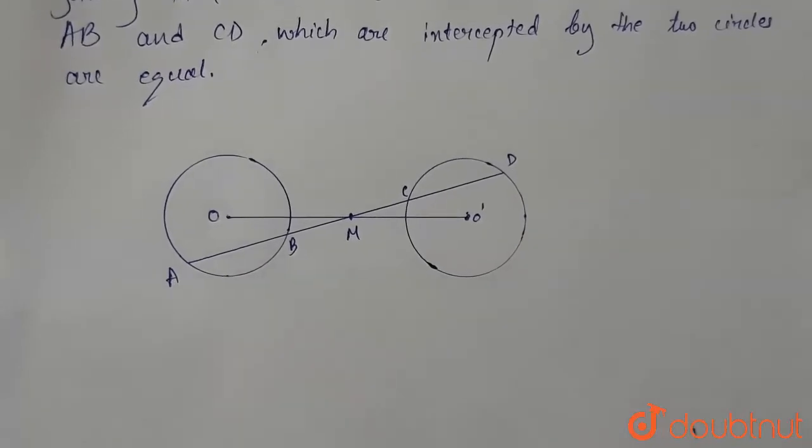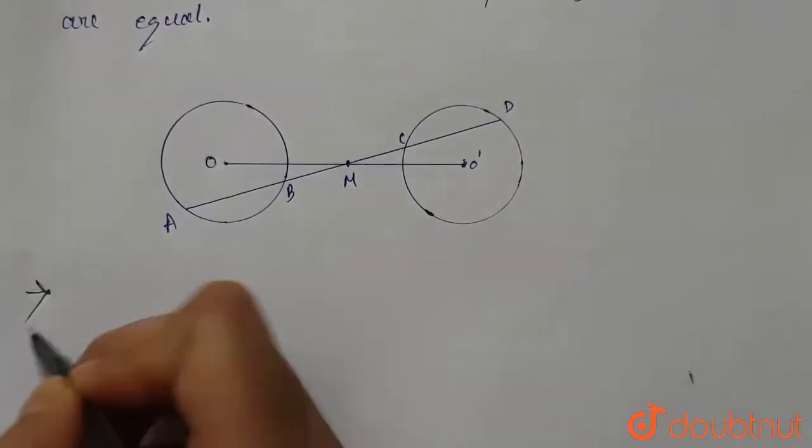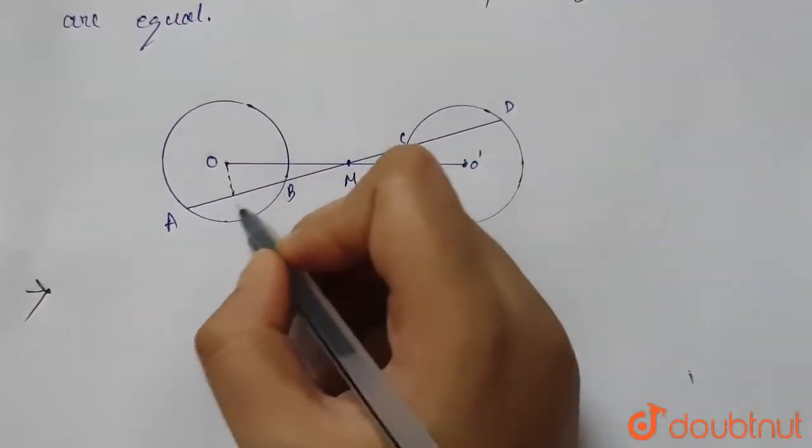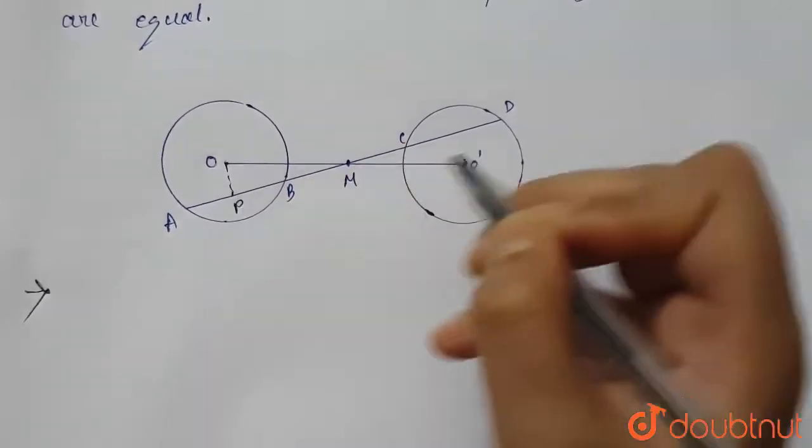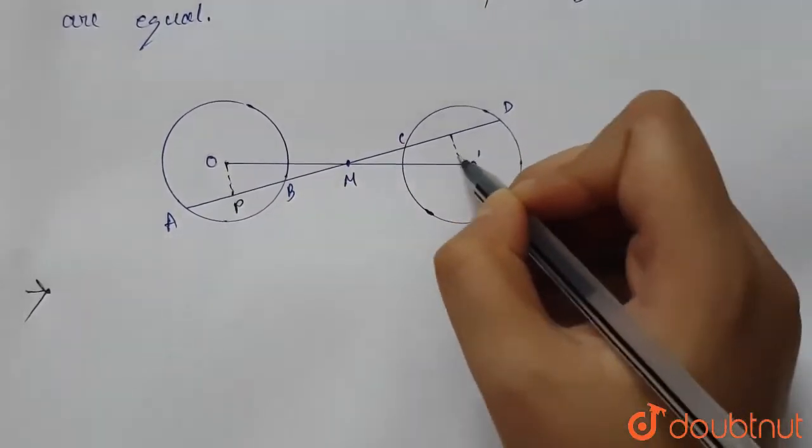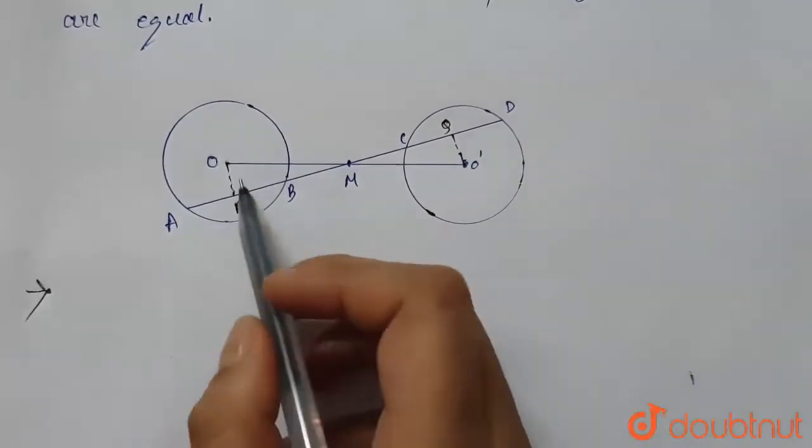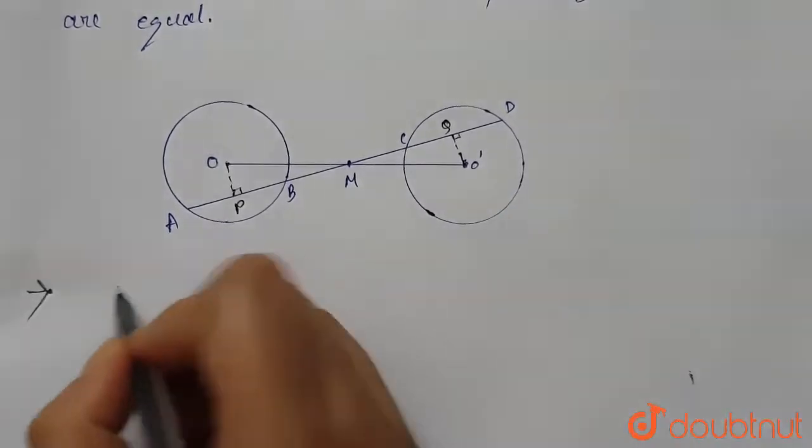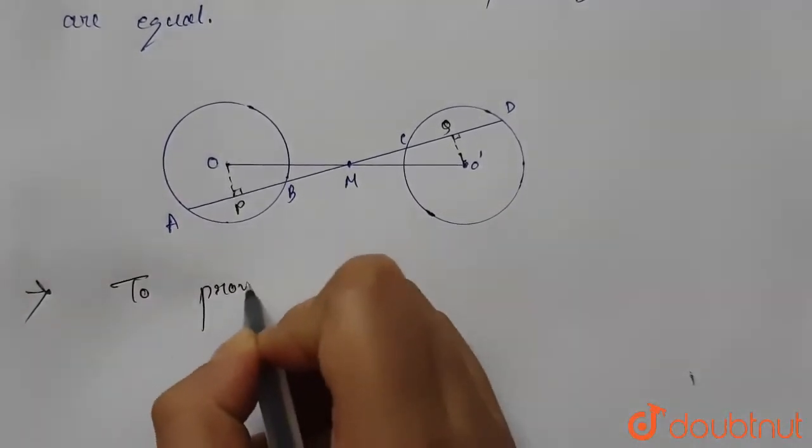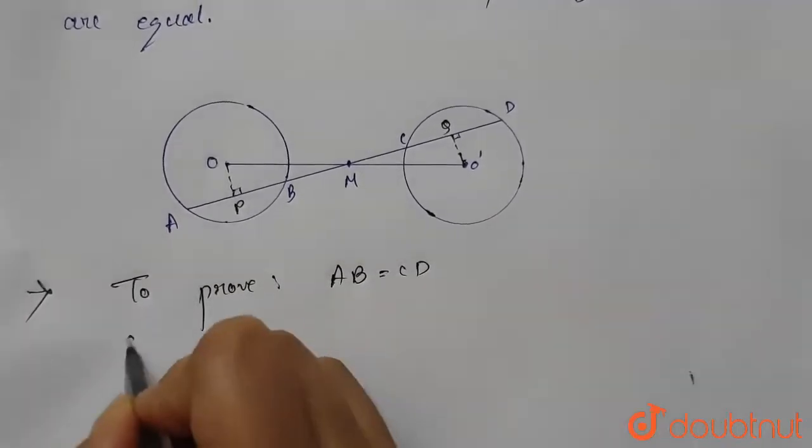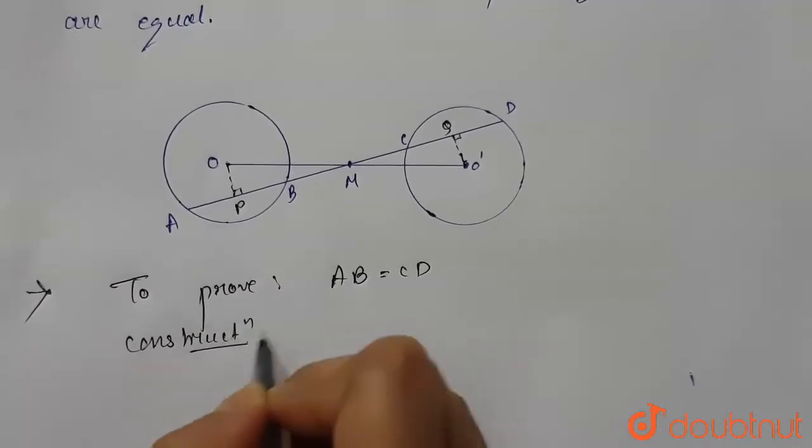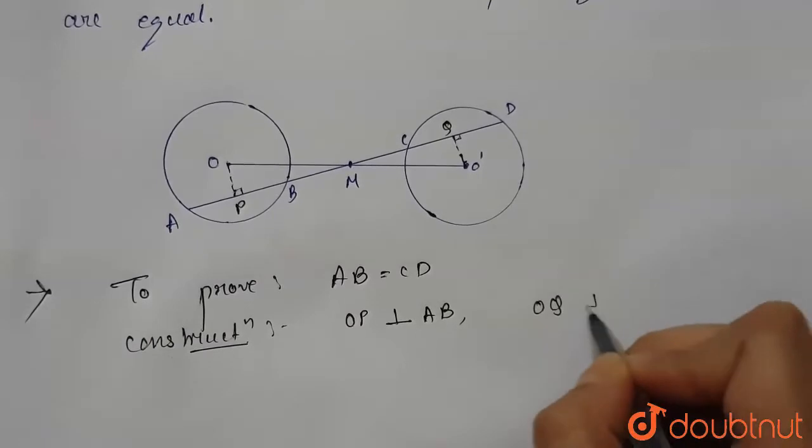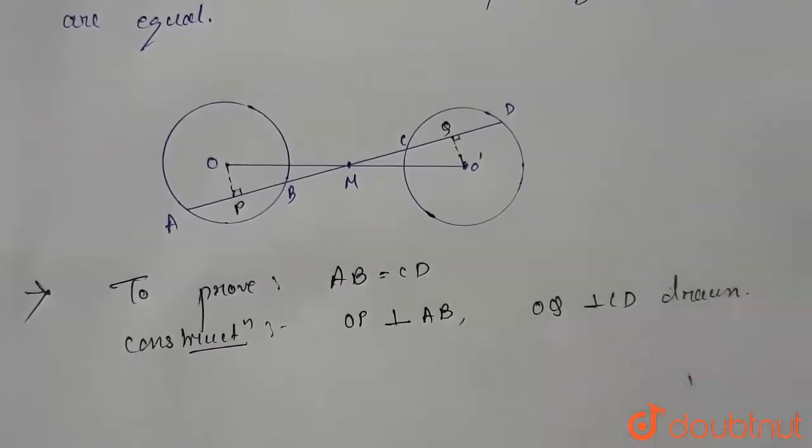So let's start with the solution. First let's make a construction. Let's draw a straight line joining AB from O and let this point be P, and similarly let this point be Q. We have drawn such that OP is perpendicular to AB and OQ is perpendicular to CD.